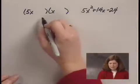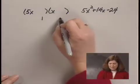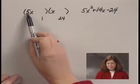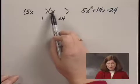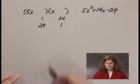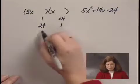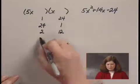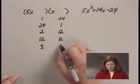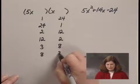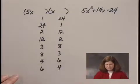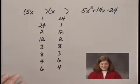Now, my possibilities will be 1 and 24. And since I'm multiplying it by 5, this number by 5 and this number by 1x, really 24 and 1 will be possibilities. I'll come back with a negative sign in a minute. 2 and 12, 12 and 2, 3 and 8, 8 and 3, 4 and 6, 6 and 4. Lots of possibilities.